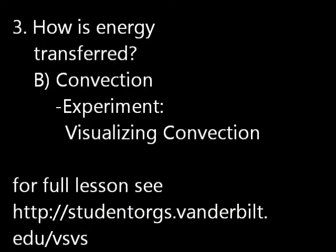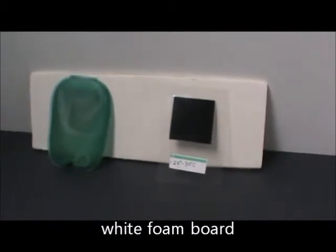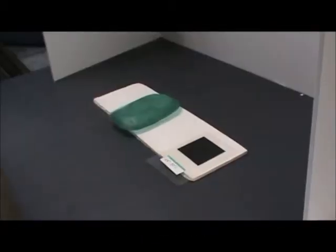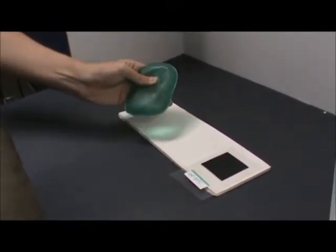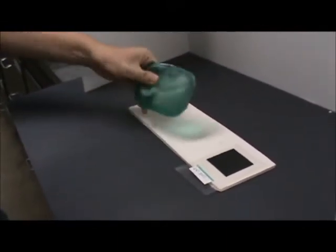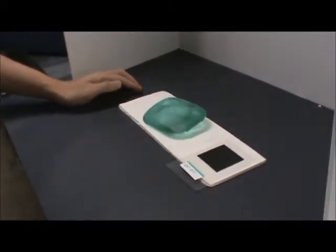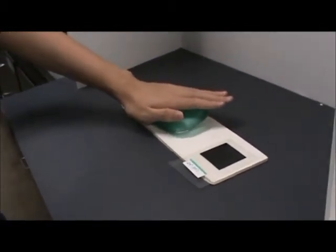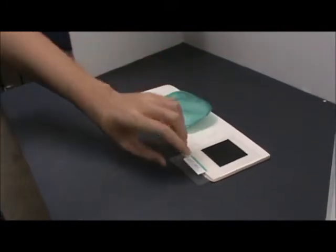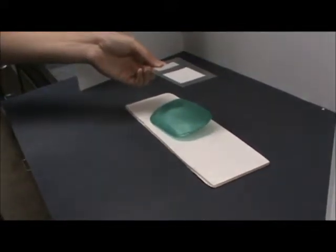Convection. Experiment. Visualizing convection. For this experiment you will need a hot pack, a liquid crystal sensor, and a white foam board. Tell students to activate the hot pack by pushing the button and place it on the white foam board. Tell students to hold their hands above it to feel the transfer of heat through convection through the air. Hold the liquid crystal sensor about 10 centimeters above the heat pack and note the color changes.